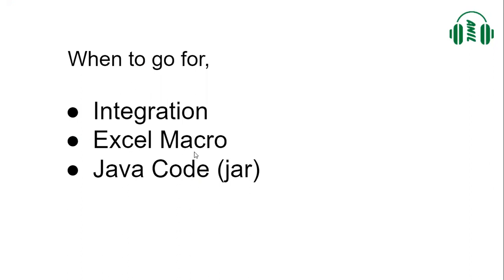To recap: we go for integration when we have a licensed integration tool and the customer is expecting scheduled daily or real-time integrations. Real-time integration means that when an update happens at the source system — for example, when a PO is updated or a new PO is created — we immediately take that data and post it into the target system.